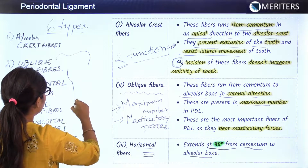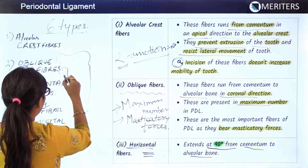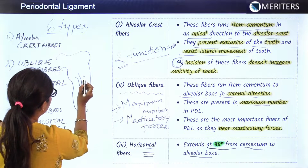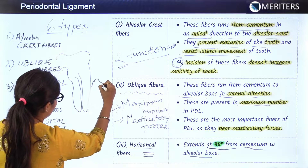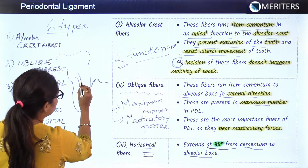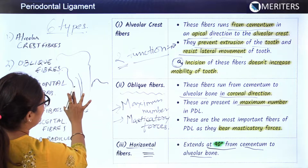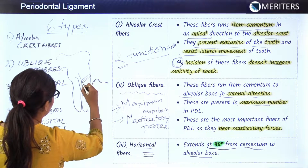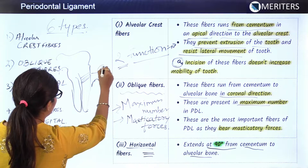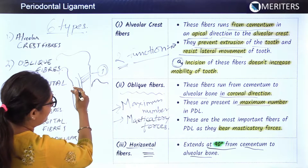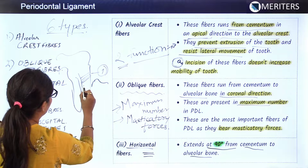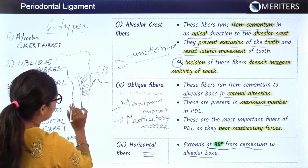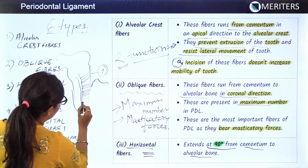In the schematic diagram, just assume this as a tooth structure. The first fiber shown is the alveolar crest fibers, which run in an apical direction. The second is the oblique fibers, running in a coronal direction and present in maximum number. The third is the horizontal fibers, which run horizontally at 90 degrees.